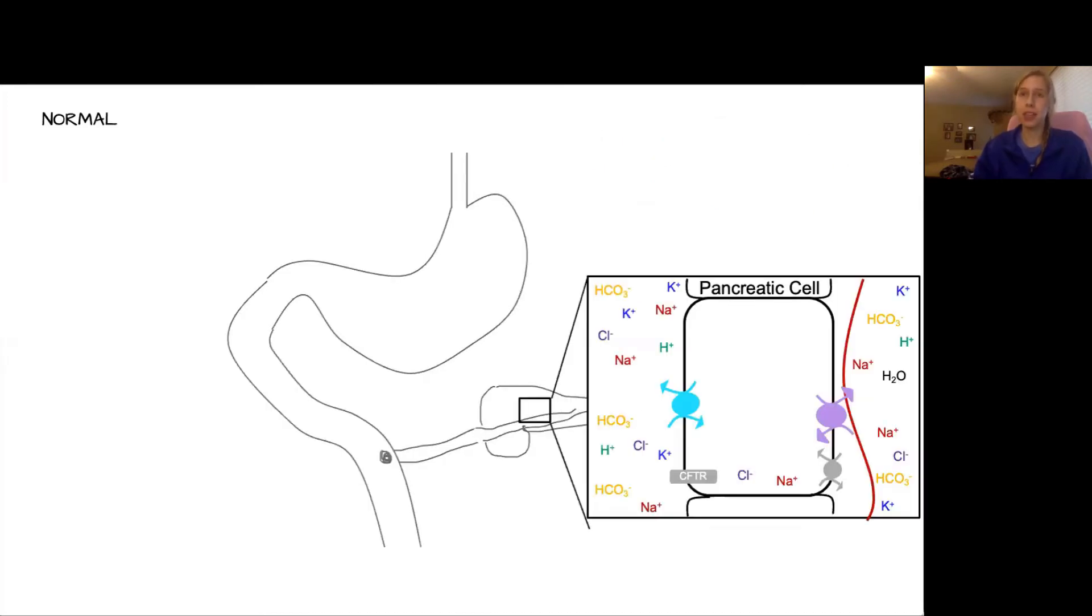Meanwhile, down in the pancreas, we have the same reaction happening, but it's going in the opposite direction. The bicarbonate is being pumped into the pancreatic lumen, and the hydrogen ion is being pumped into the blood.